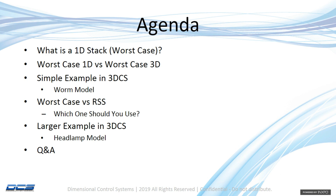Our agenda is to show and discuss 1D, show the difference between one-dimensional and three-dimensional tolerance stacks, and show a simple model in our 3D software depicting the differences between 1D and 3D. We're going to discuss worst case and root sum squared analysis, otherwise referred to as RSS. Then we'll go into a more realistic model to show how three-dimensional tolerances interact with each other, and we will end with a Q&A session.